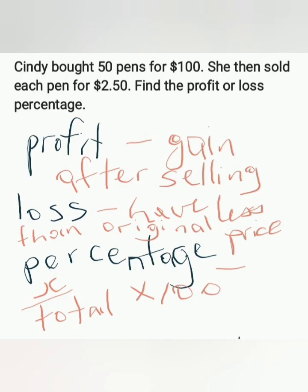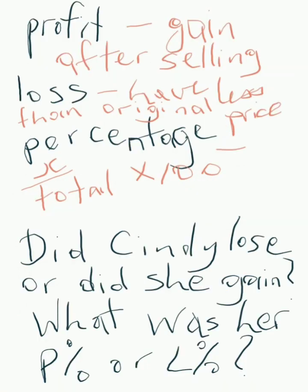Let's now try problem number two. Just like the previous problem, we have to do the steps in order. So we have to begin with surveying. I read the problem and I surveyed and I realized that the word profit, the word loss and the word percentage are popping outside. Don't match key terminologies. Profit meaning gain after selling. Loss meaning having less than the original price. Now I'm at questioning, did Cindy lose or did Cindy gain? And what was her profit or loss percentage? That's what they want us to find out.